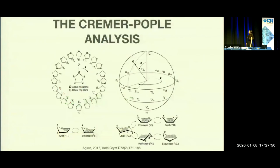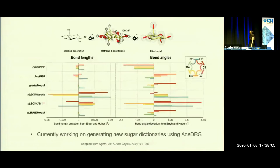Here you can see a plot of the angles calculated by the Cremer-Pople algorithm on the left for furanose, where we only have one angle phi, and for pyranose where we have the angles theta and phi.